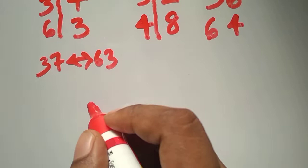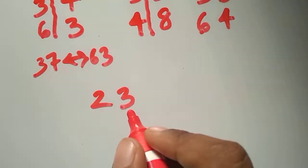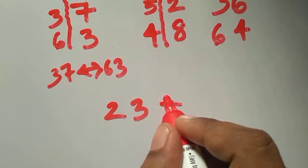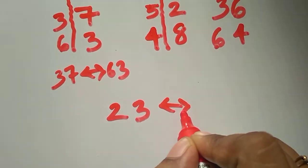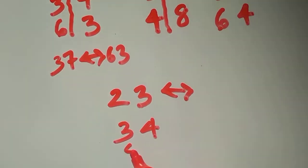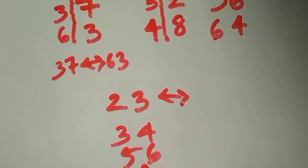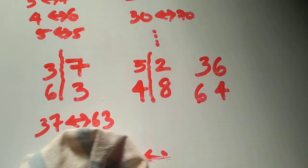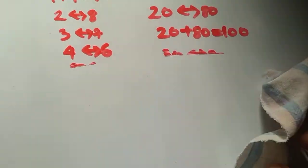Likewise, for 36: the complement of 6 is 4, and for 3 it will be 6, so the 100's complement of 36 is 64. Now as an exercise, find the complement for 23, then for 34, then for 56.